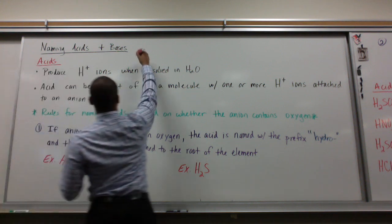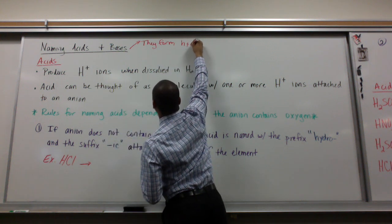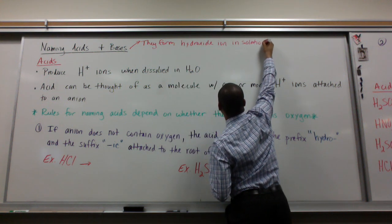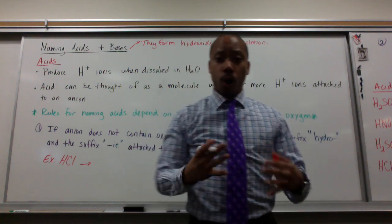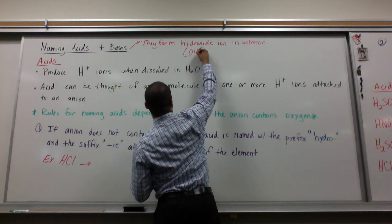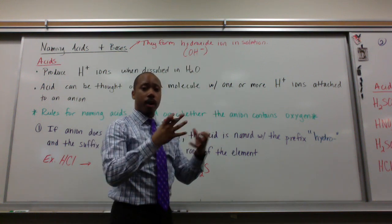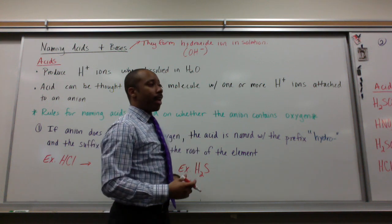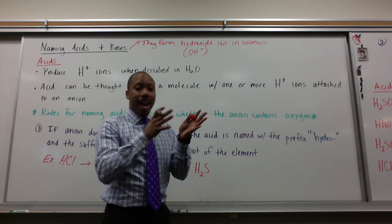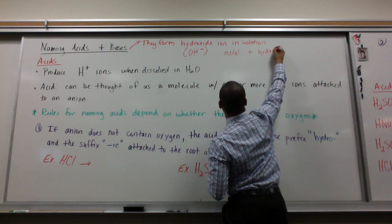Bases are fairly simple. Something you need to know about bases is that they form hydroxide ions in solution. So when a base is dissolved in water, hydroxide ions form. Hydroxide is OH minus — those are floating around in solution when a base is dissolved in water. When we name bases, they're very similar to ionic compounds in that we name them as the metal and the hydroxide: metal plus hydroxide.